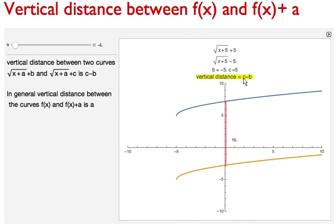This is the easy way to find the distance between these two curves. That is c minus a. Here, 5 minus negative 5, that is 10, which is showing in the graph.